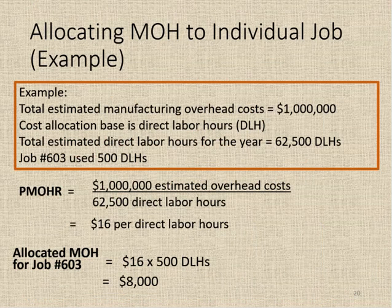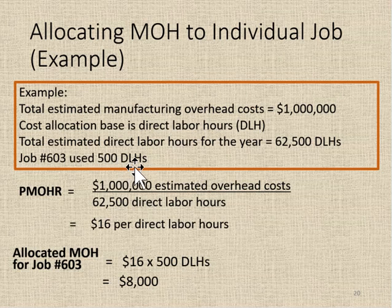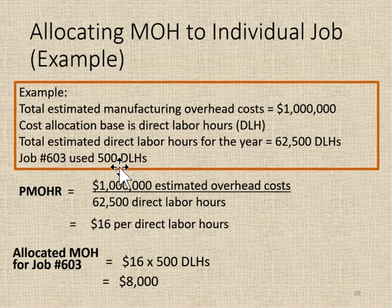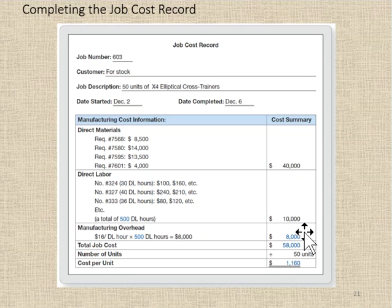Here's another example. The total estimated manufacturing overhead costs are $1,000,000. The allocation base is direct labor hours — you always have to pay attention to what base they're using. The total estimated direct labor hours is 62,500 and the job uses 500 direct labor hours. So $1,000,000 divided by 62,500 gives a predetermined manufacturing overhead rate of $16 per direct labor hour. That particular job using 500 direct labor hours results in $16 times 500, or $8,000 of applied overhead.